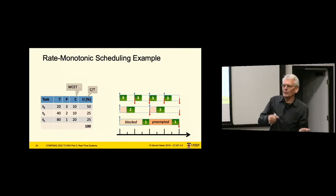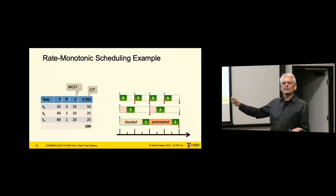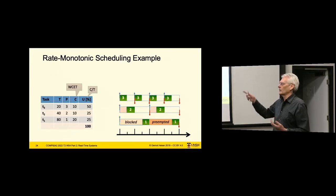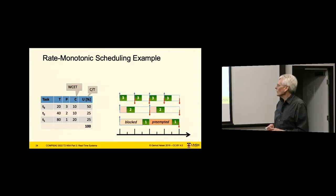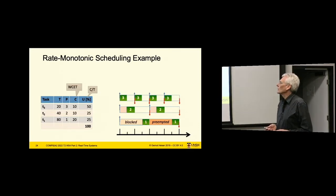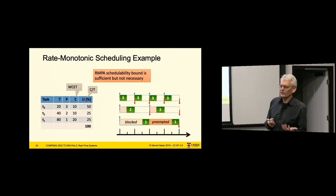This shows that rate monotonic, while not optimal in the sense that it cannot guarantee schedulability above the threshold, there are cases where things work out — generally when the periods have nice ratios between them and you can bin-pack the whole thing densely. This is a case showing that the RM schedulability bound is a sufficient but not a necessary bound.